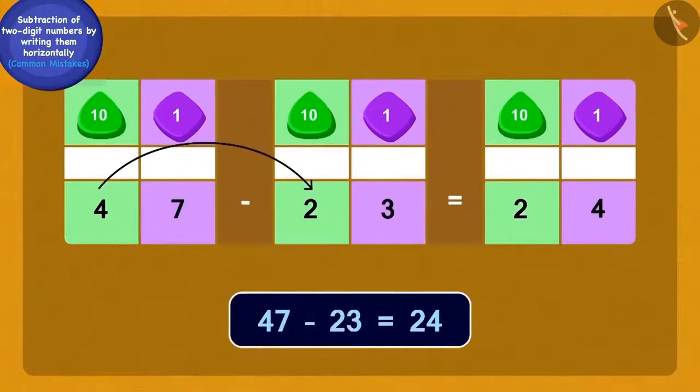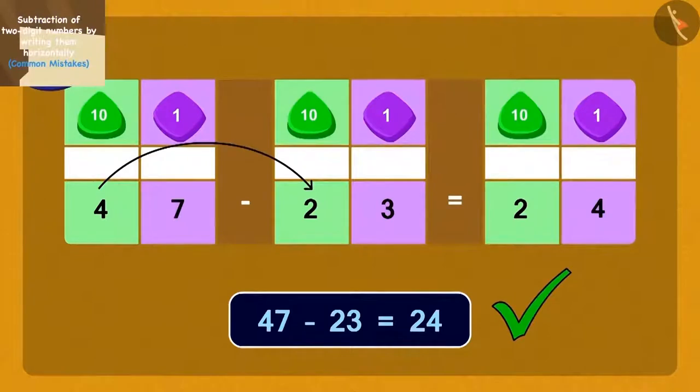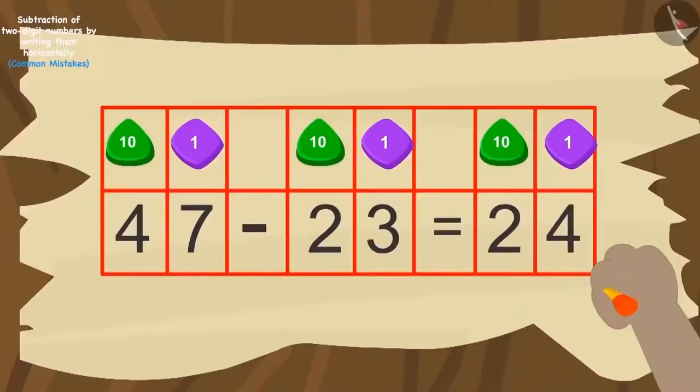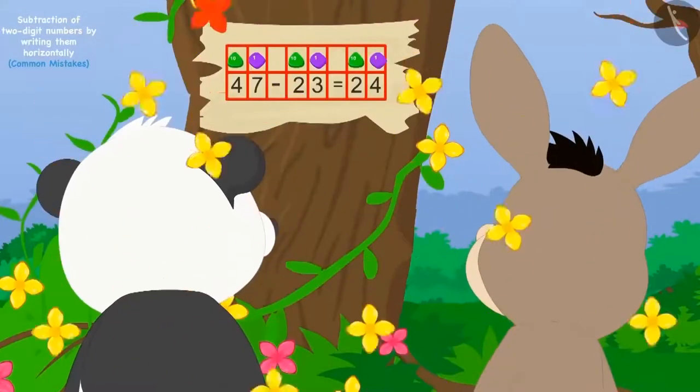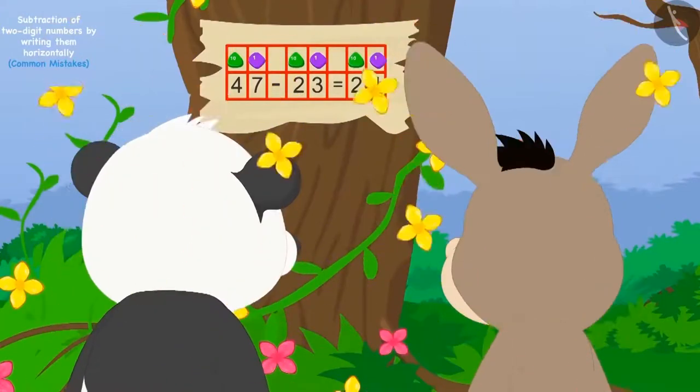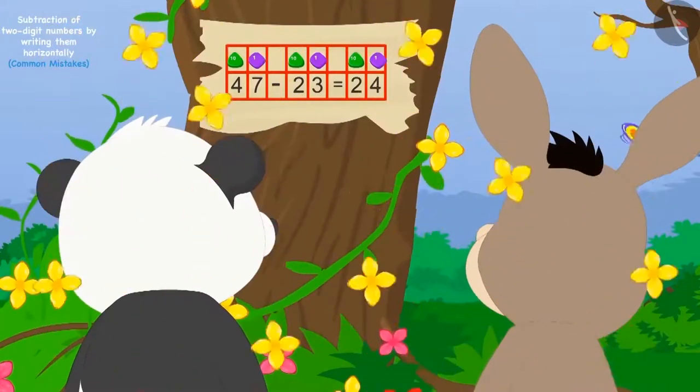Children, is Bola's answer correct? Yes, Bola's answer is absolutely correct. As soon as Bola wrote the answer on the tree, lots of golden flowers began showering down the tree.